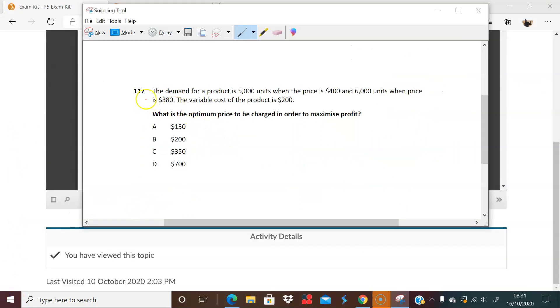And carrying on with 117, really 117 is a continuation of 116. All this information is the same. They're just giving us some additional information. The variable cost of the product is 200. So now they're giving us the cost side of the story. And they're asking, what is the optimum price?